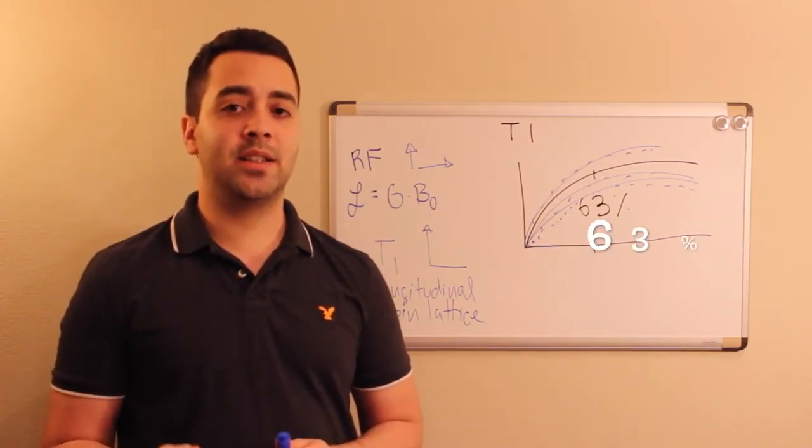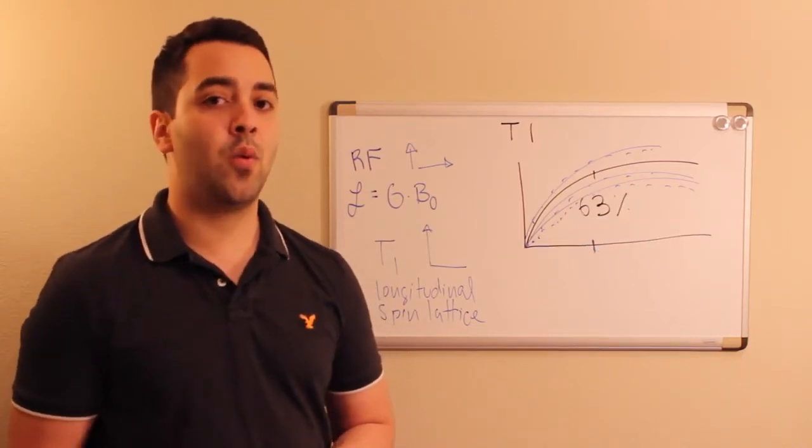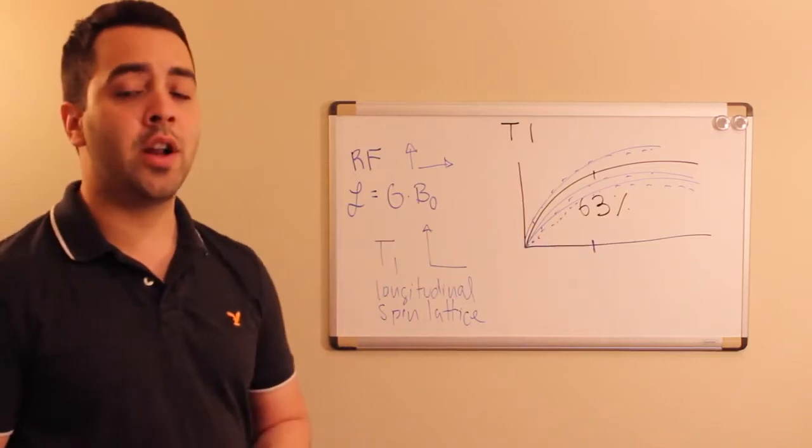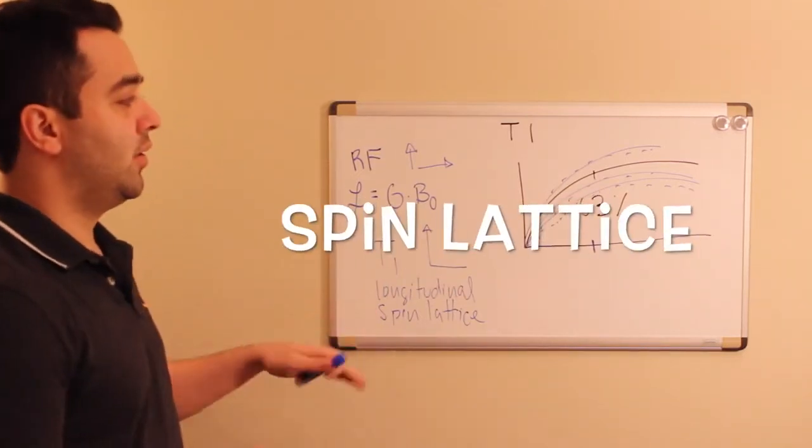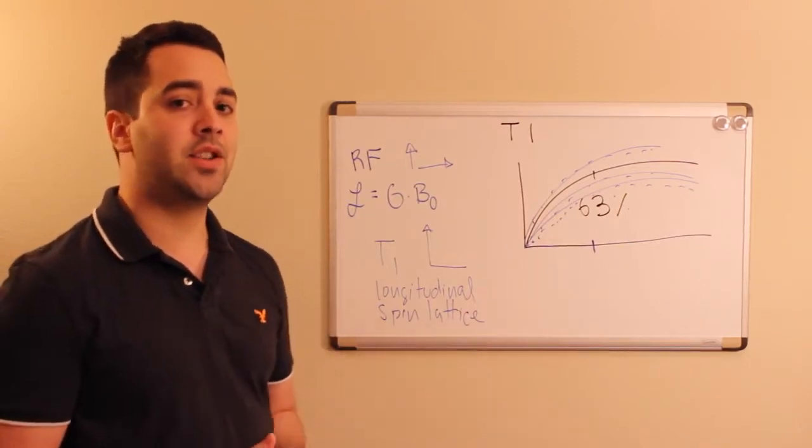Specifically, it is defined as the 63% of recovery that's known as our T1. It's also known as our longitudinal magnetization recovery or spin lattice. Those are different names for the interactions that occur and the magnetization that's recovering.